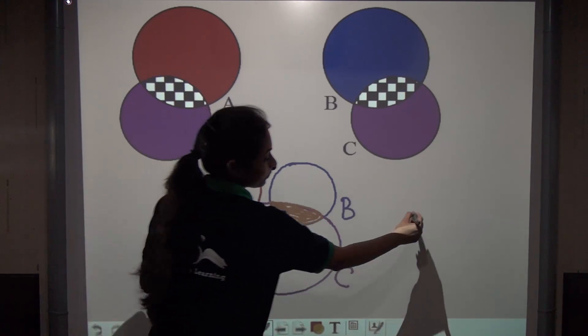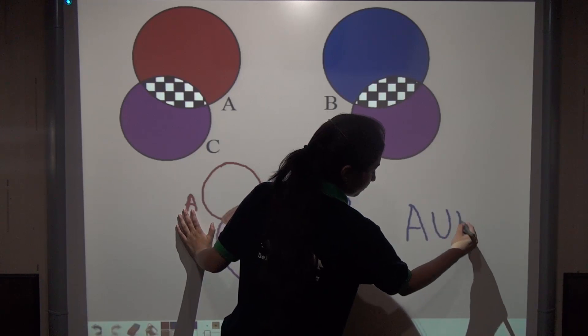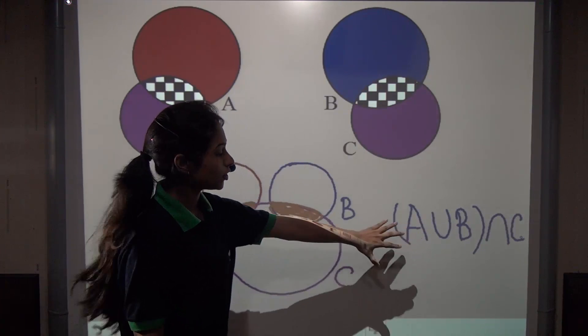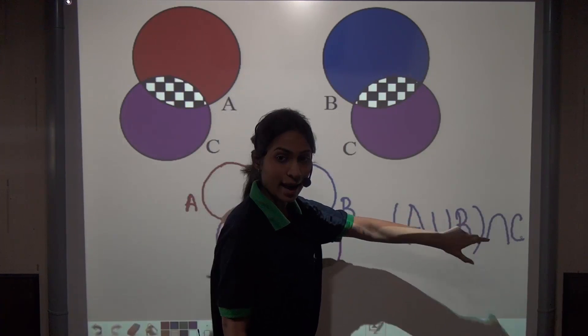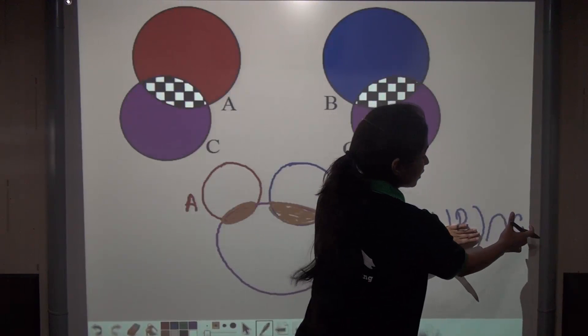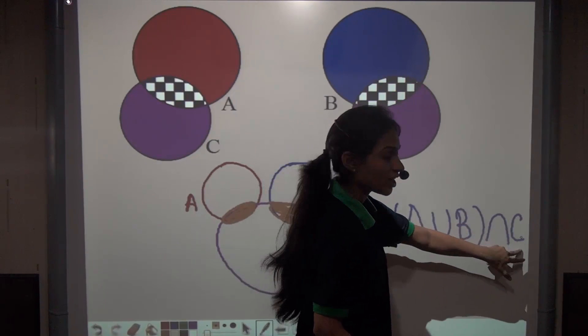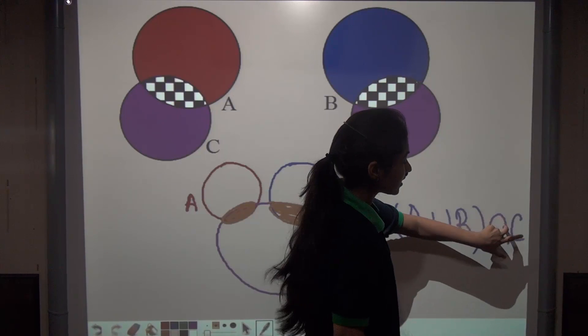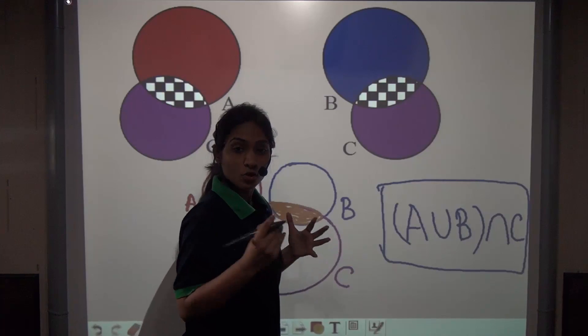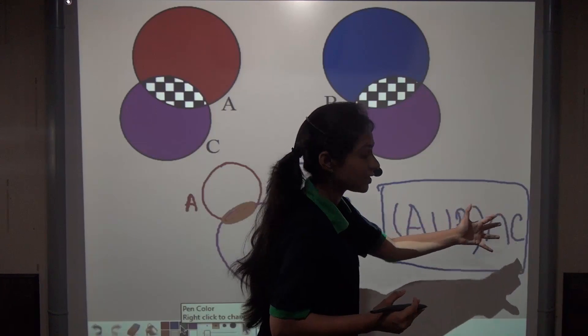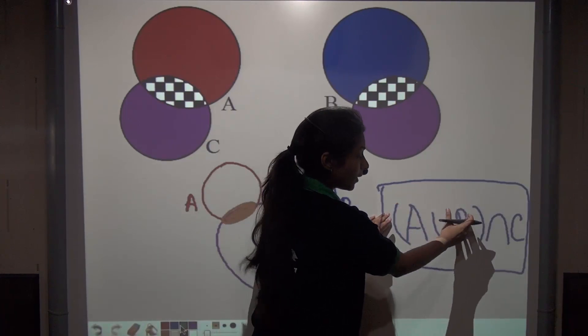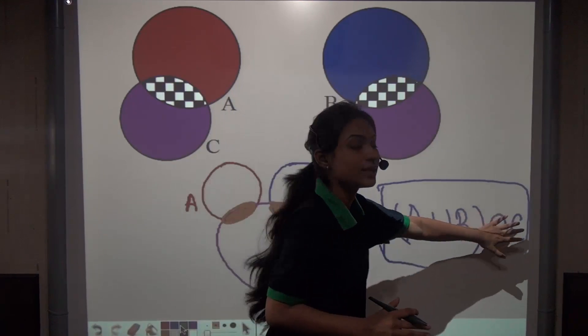So I can say that the teacher wants A union B intersection with C. Either a student should be from section A or section B, and this 'or' can be represented by union. But it is compulsory that the student should know how to play chess. So intersection with C gives their solution. Now you know that (A∪B)∩C represents elements which are in A or in B but which are compulsorily present in C.